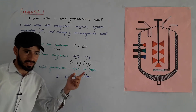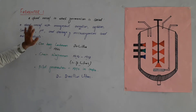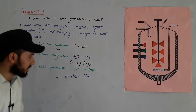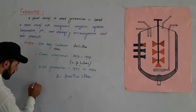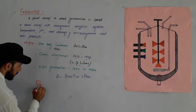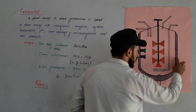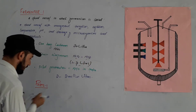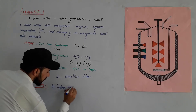So industrial fermenters can be very large machines. Now let's look at the parts of the fermenter. The parts of the fermenter — number one on the outside is the cooling jacket.